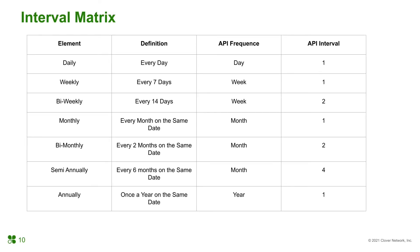The plan interval can be a combination of things. Here is an example reference chart on how the interval and interval count can play together. For example, if you want a bi-weekly recurring plan, you will specify the interval as week and the interval count as 2. Please make sure to keep the merchant and customer aware of your recurring payments. Transparency is key. More variations can be found on CloverDocs.